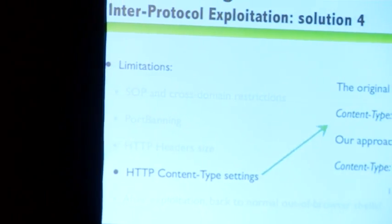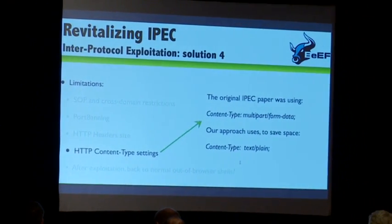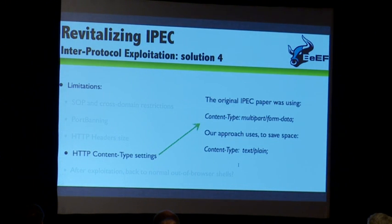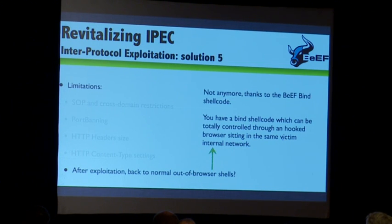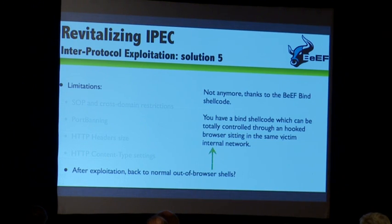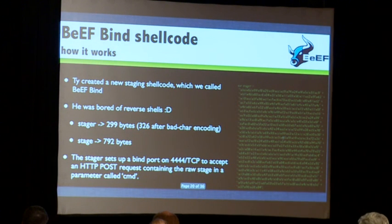Another good thing that helps us save some size is actually overwriting the user agent from the Firefox extension, because you can do that as well. Another difference between Wade's original research and this new technique is that we are sending the cross-domain POST request with content-type text/plain. This is quite cool because it means we can have more space for our shellcode, and we don't need to deal with all those boundaries required in a multipart form-data request.